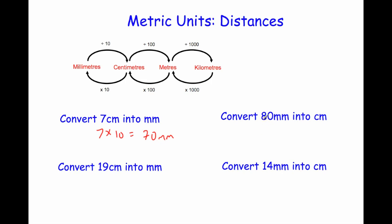Next: change 18 millimeters into centimeters. To change from millimeters into centimeters we divide by 10. So 18 divided by 10 is equal to 1.8 centimeters. That makes sense because if one centimeter is 10 millimeters, 18 millimeters would be 1.8 centimeters.